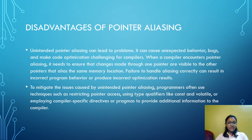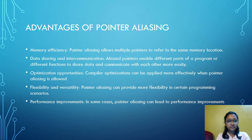To mitigate the issues caused by unintended pointer aliasing, programmers often use techniques such as restricting pointer access using type qualifiers like const and volatile, or employing compiler-specific directives or pragmas to provide additional information to the compiler.